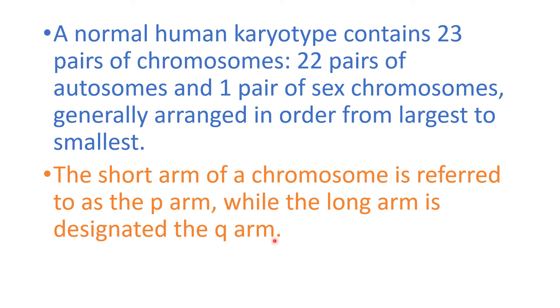The chromosomes have two arms. The short arm of the chromosome is referred to as the P arm, while the long arm is designated as the Q arm.